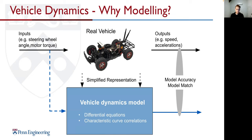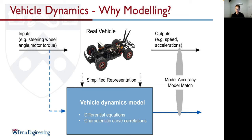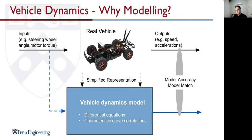Why do we want to model something? The car has inputs like steering angle and motor torque. We apply these to the real vehicle and get outputs: speed, acceleration, vehicle movement. As engineers, we create a vehicle dynamics model — a simplified representation of the real vehicle — using those same inputs to get outputs. We do this by creating differential equations or characteristic curve correlations, for example for the tires.